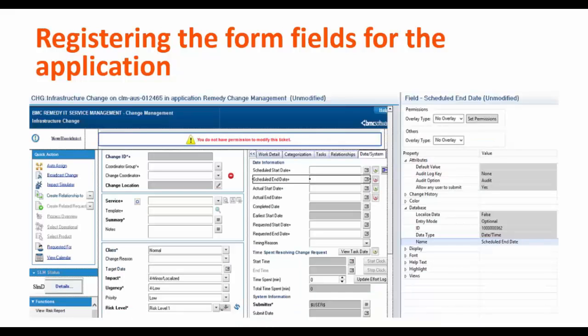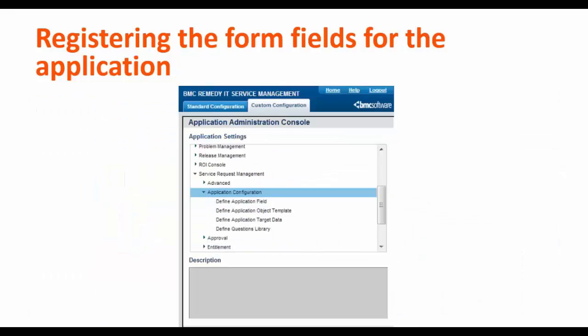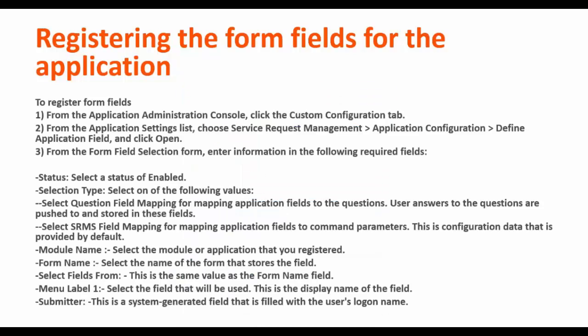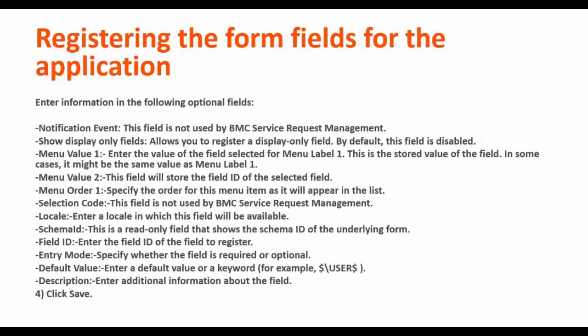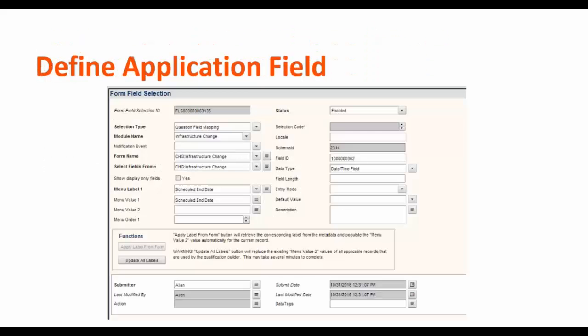For example, on the CH infrastructure change form, we're going to take the database ID of scheduled end date. To register the form field on the application, go to application administration console in service request management and click on application configuration. First, we need to define the application field and then define the application target data. The important fields to remember are the selection type, module name, form name, menu label, menu value, field ID, and entry mode.